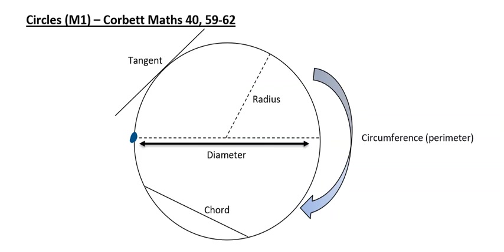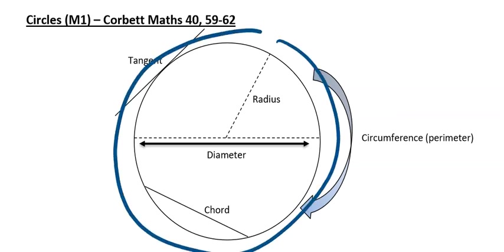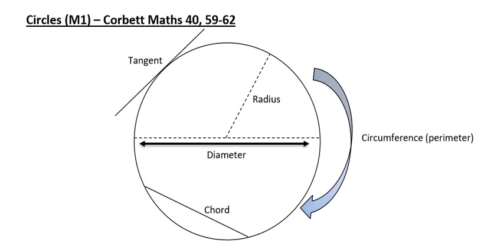The next one is if you have two points on the circumference of a circle, a chord is a line which just joins those two points. So that is a chord - C-H-O-R-D - a line which joins two points on the circumference of a circle. The circumference is the perimeter of the circle, so it is all the way around the outside of the circle. That dimension is the circumference of a circle.